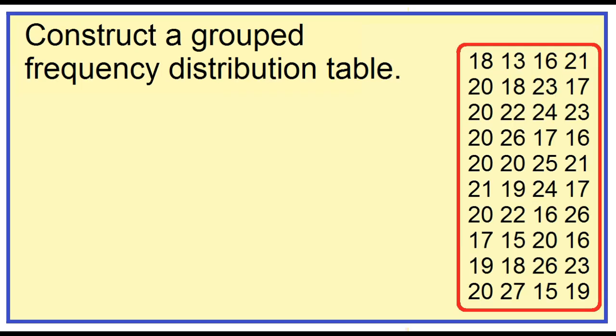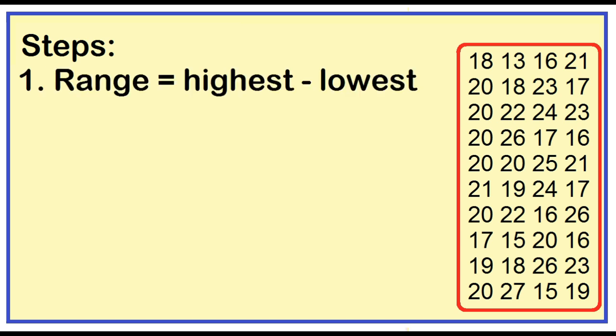How to construct a grouped frequency distribution table. First, find the range. Range is equal to highest minus lowest. The highest age is 27 and the lowest age is 13. 27 minus 13 is equal to 14.